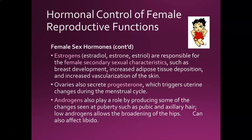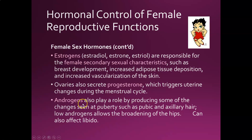The ovaries also secrete progesterone, which triggers uterine changes during the menstrual cycle. I like to think of progesterone as the hormone that helps facilitate pregnancy. Estrogen and progesterone are the two main female hormones, but females also produce some androgens — the male hormones like testosterone and DHEA. These androgens are responsible for pubic and axillary hair, and low levels of androgens allow the hips to broaden so we can carry children.